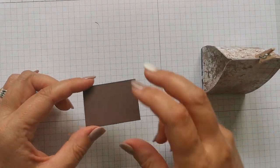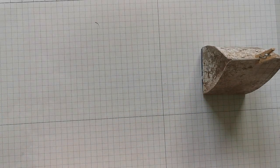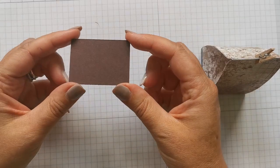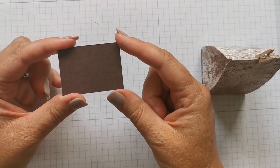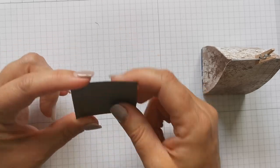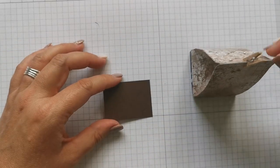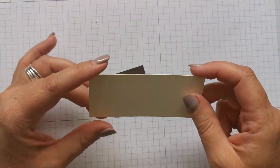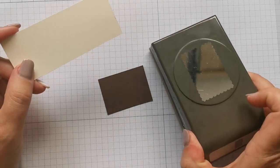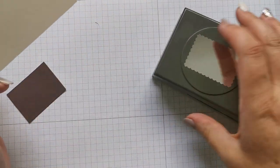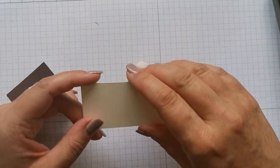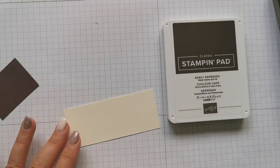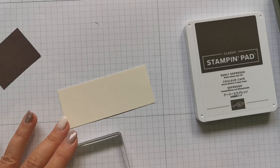And I've got a piece of Early Espresso. And this measures one and a half inches by a little bit over two inches. So not quite two and an eighth, but it was more than two inches. Now, the reason I can't be specific about that is because I just wanted it to, I'll show you in a minute what I'm going to do with this. I'm going to punch this with the rectangle postage, large rectangle postage punch. But the first thing I'm going to do is stamp this in Early Espresso ink.